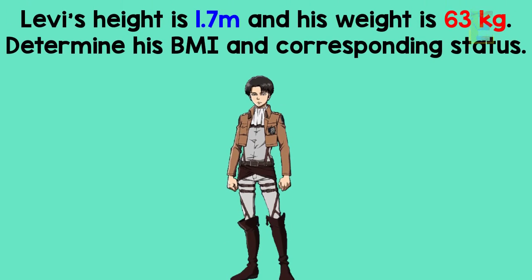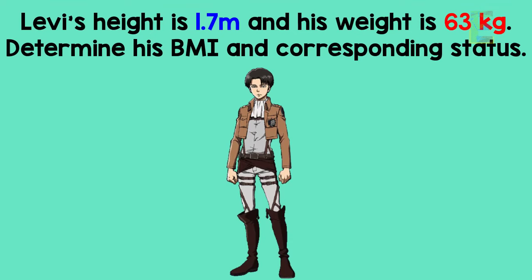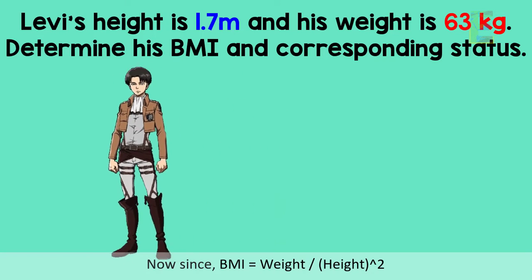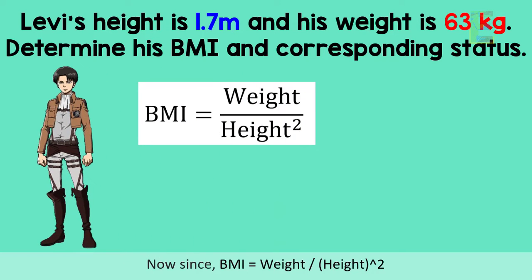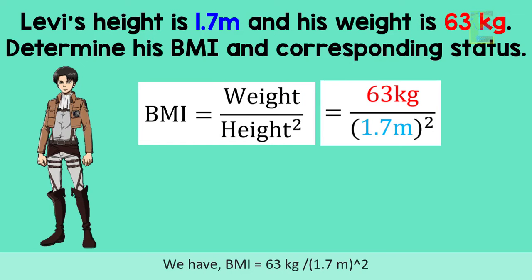So now let's have this problem: Levi's height is 1.7 meters and his weight is 63 kilograms. Determine his BMI and corresponding status. Since BMI is equal to weight over height squared, we have BMI is equal to 63 kilograms divided by 1.7 squared.